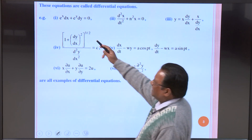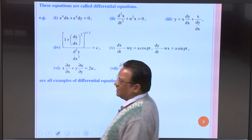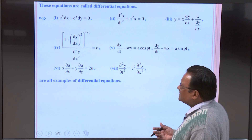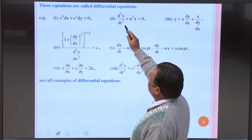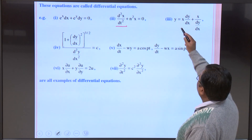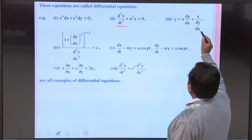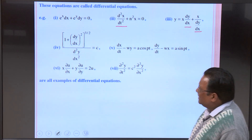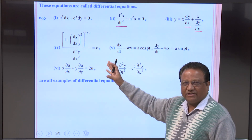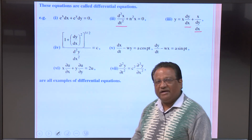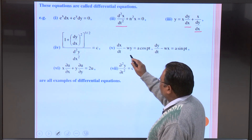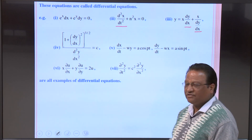Examples of differential equations include: e^x dx + e^y dy = 0, which involves derivatives; d²x/dt² + n²x = 0, where the derivative term gives it its character; y = x(dy/dx) + x/(dy/dx), which involves two derivative terms; and [1 + (dy/dx)²]^(3/2) / (d²y/dx²) = c, which also involves derivatives. Another example is dx/dt − wy = a cos(pt), which is also a differential equation.